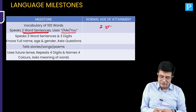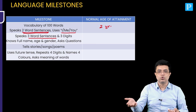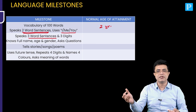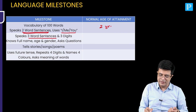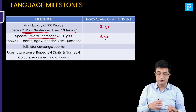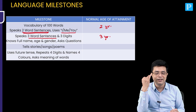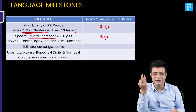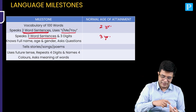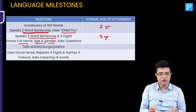Then speaking 3-word sentences — the child is able to make those starting from 3 years of age. He is also able to count and remember 3 digits starting from 3 years of age. So: 3-word sentences, 3 digits, and a 3-wheeled cycle — all of them at 3 years of age. He also knows his full name, age, and gender starting from 3 years of age.